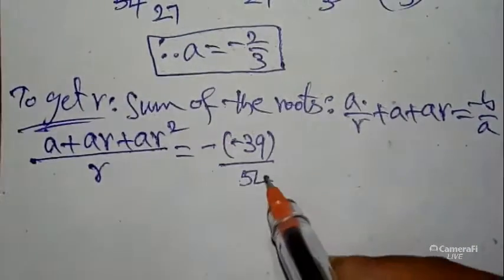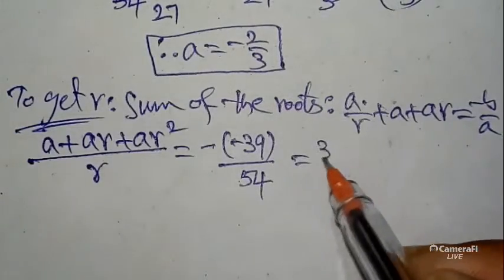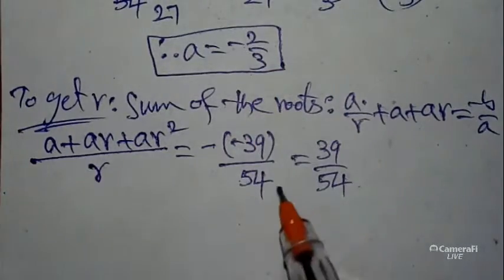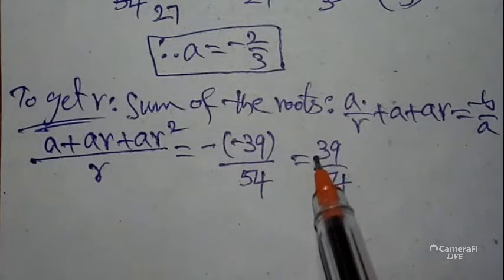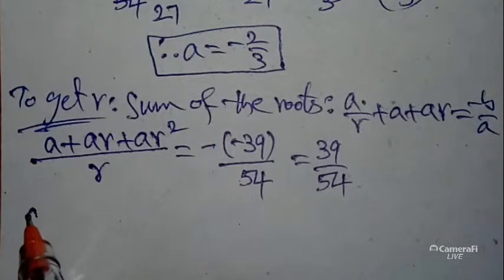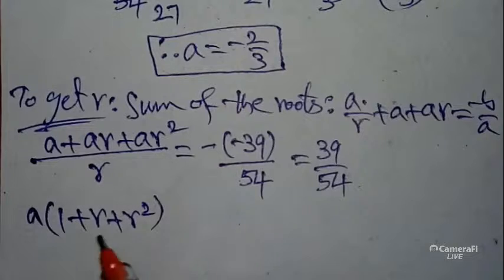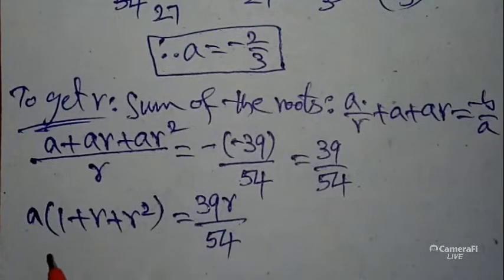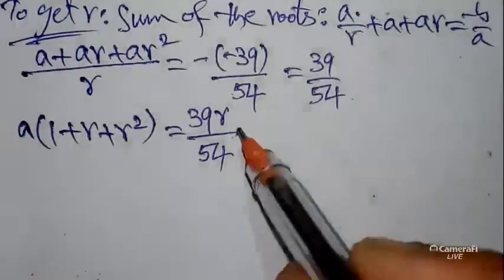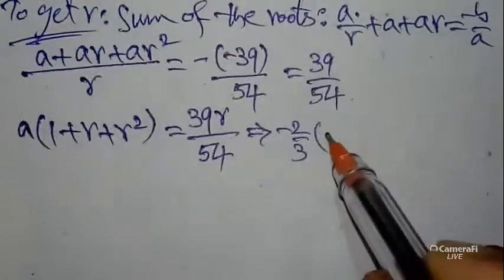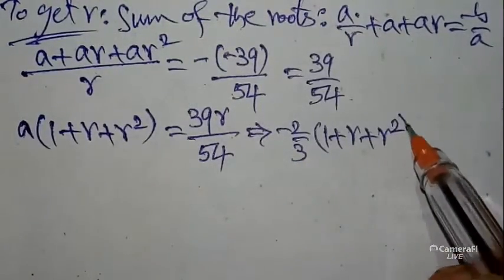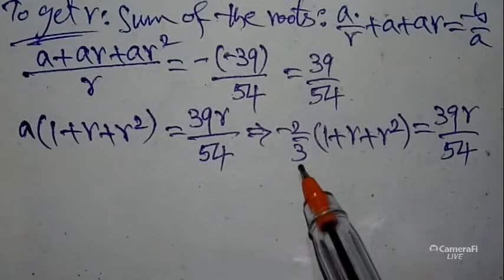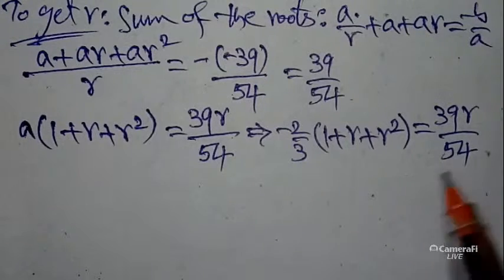Substituting: b = minus 39, a = 54, so −b/a = −(−39)/54 = 39/54. Before substituting a = −2/3, cross-multiply r to the other side. We get a(1 + r + r²) = 39r/54. Now substitute a = −2/3: (−2/3)(1 + r + r²) = 39r/54.